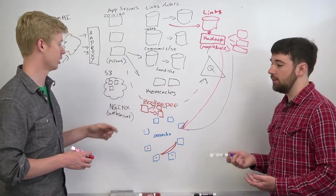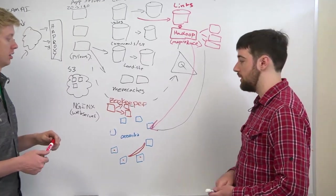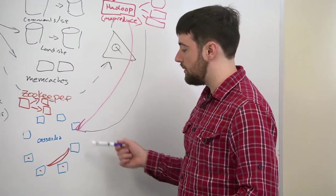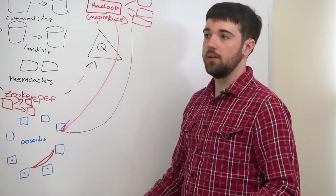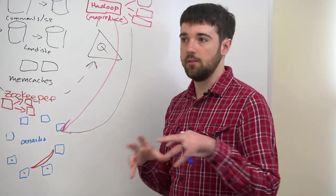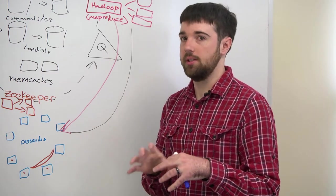So locking, lock contention is a big thing for us right now. As I was saying with this Cassandra stuff, whenever you vote on a link in a popular subreddit, it has to lock on that whole subreddit's listing.